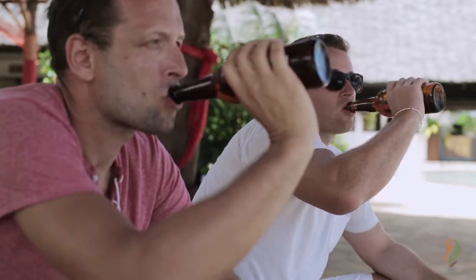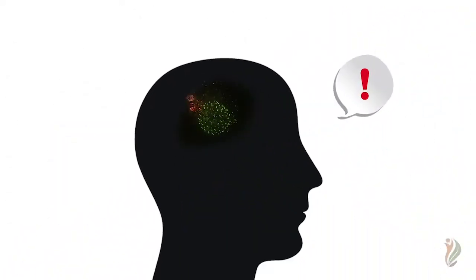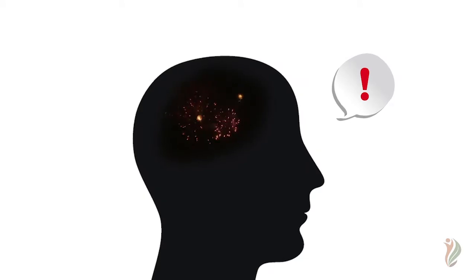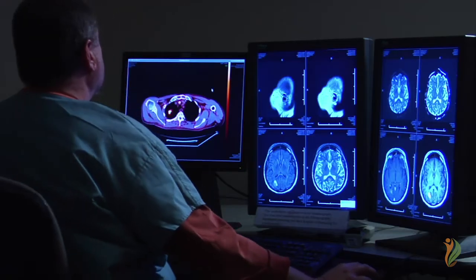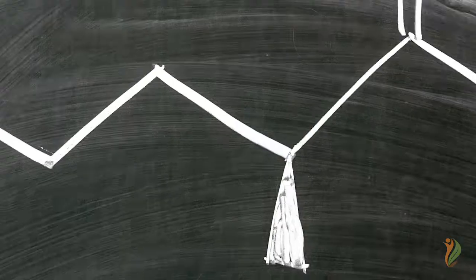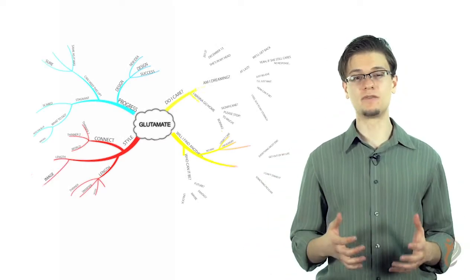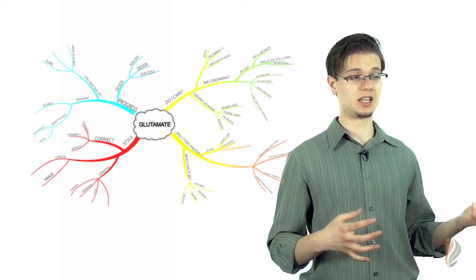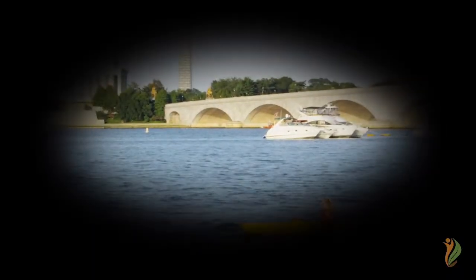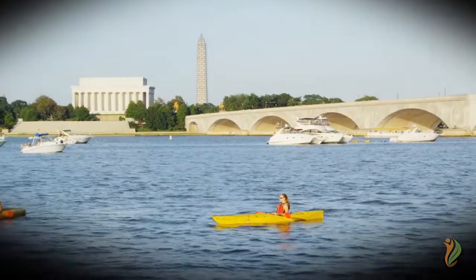When someone uses a psychoactive substance, it unleashes an inhuman amount of dopamine, something that you can never get from any natural experience. In fact, the brain even has a hard time comprehending how much dopamine is now in the system. It releases another neurotransmitter known as glutamate. Now glutamate is responsible for your memory functions. The more glutamate that is in the system, the more likely you are to remember this experience and in greater detail.